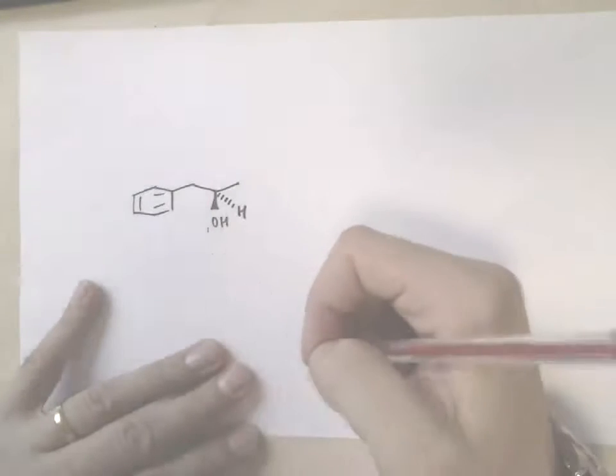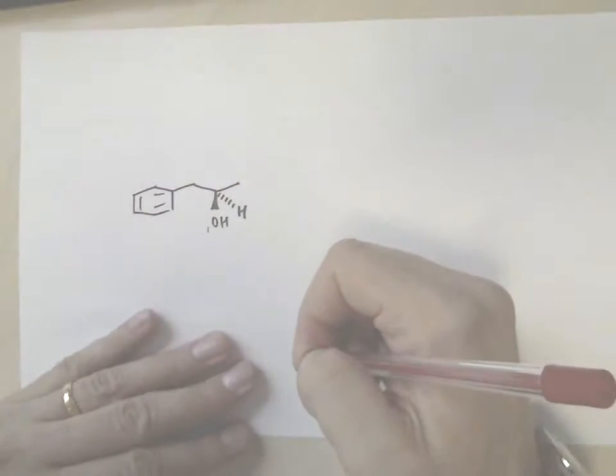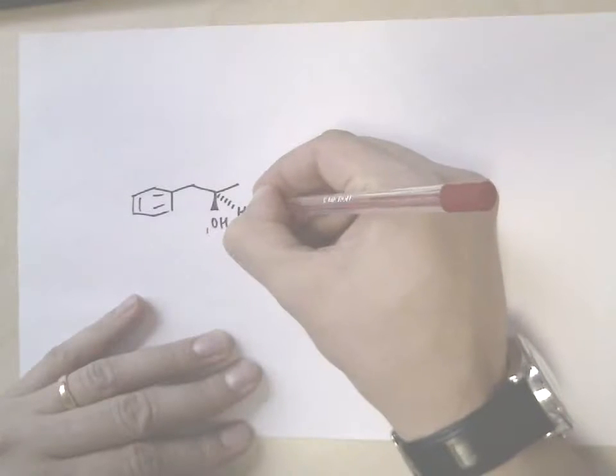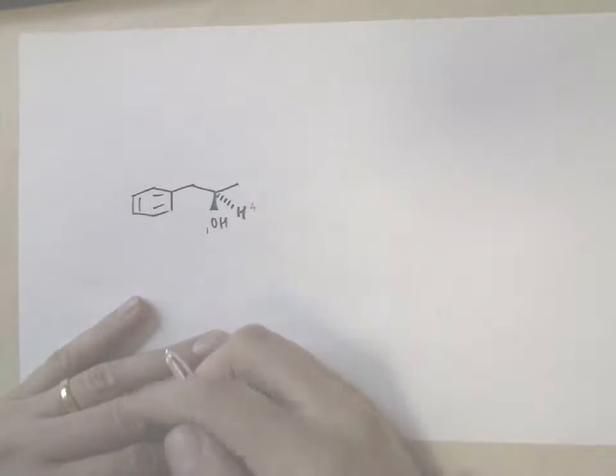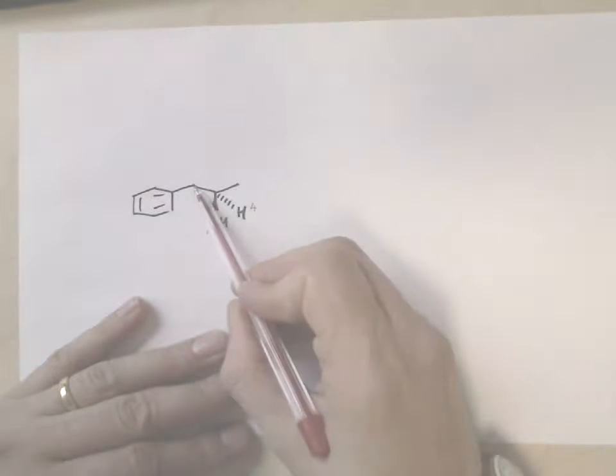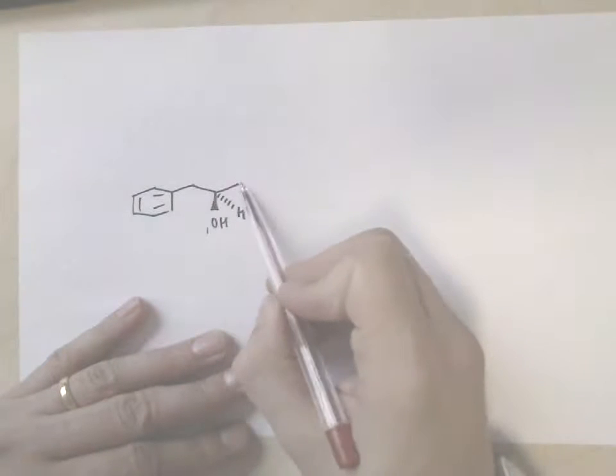Then, for the purposes of this lecture course, hydrogen will always be four, and that just leaves this carbon here and this carbon here.